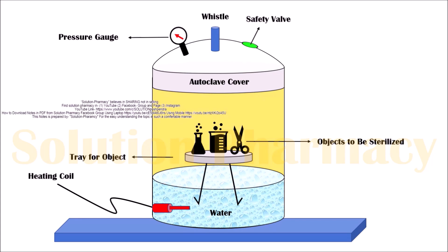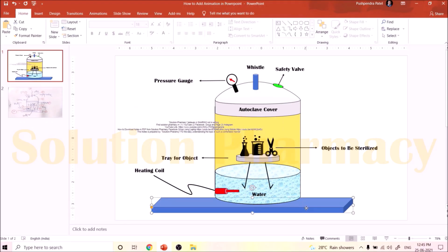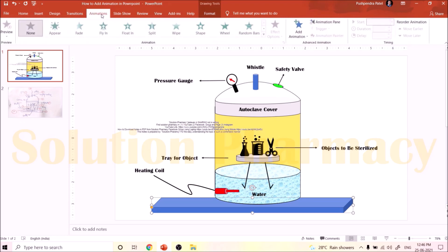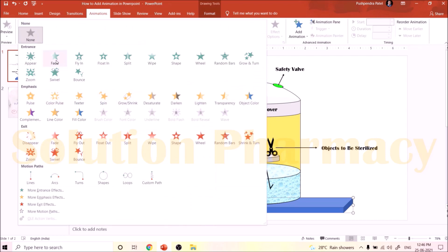After making the rough diagram on paper and adding sequence numbers, open the PowerPoint diagram we prepared in the first part and let's start adding animation. First, according to the sequence, we add animation to the table top — the stage on which the autoclave is placed. Click on the stage to select it, then click on the Animation option at the top. You can see many options like Appear, Fade, Fly In, Float, Wipe, Shape, and many others.